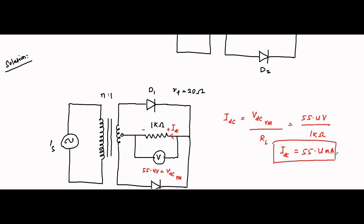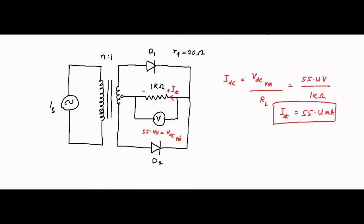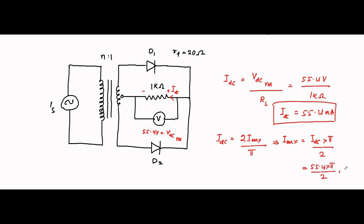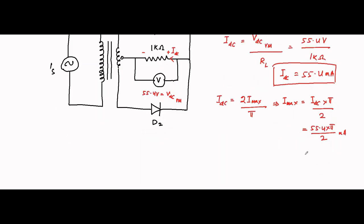We know that I_DC equals 2·I_max divided by pi. That implies I_max equals I_DC times pi divided by 2, which is 55.4 times pi over 2 milliampere, coming to approximately 86.978 milliampere. This is the maximum value of the current.